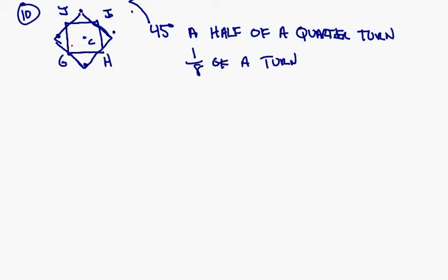So G becomes M, so this is M. H becomes N, so this is N. There's M, there's N. I now becomes O, so there's O right there.